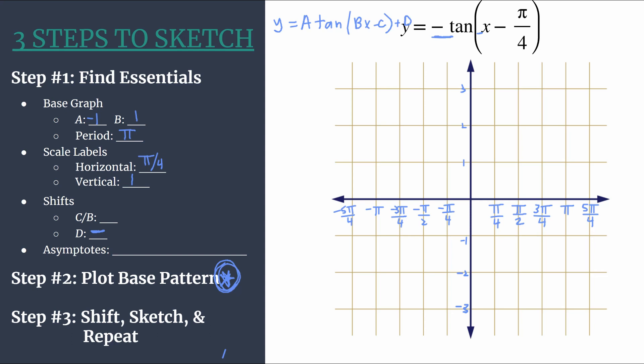We have C over B, and we want to be careful here to make sure we have the sign correct. In the general form equation with BX minus C, when we look in our function's input, we have X minus π over 4. So C must be π over 4. B is one. So we will be moving right π over 4 units. Another way to say that is our phase shift is positive π over 4. Notice that's equal to one horizontal grid mark.